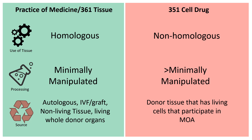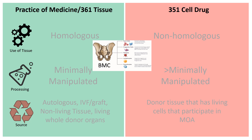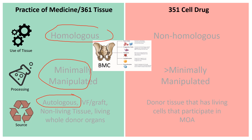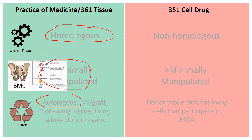So now let's look at some things and see how they classify. If we look at bone marrow concentrate, we can easily classify this. We know it's autologous, so that's pretty easy. It is minimally manipulated. And with regard to homologous versus non-homologous, for the most part — cartilage repair, fracture healing, involvement in tendon healing — it's going to be homologous because it participates in those things in the body. So it's going to go off to the left.